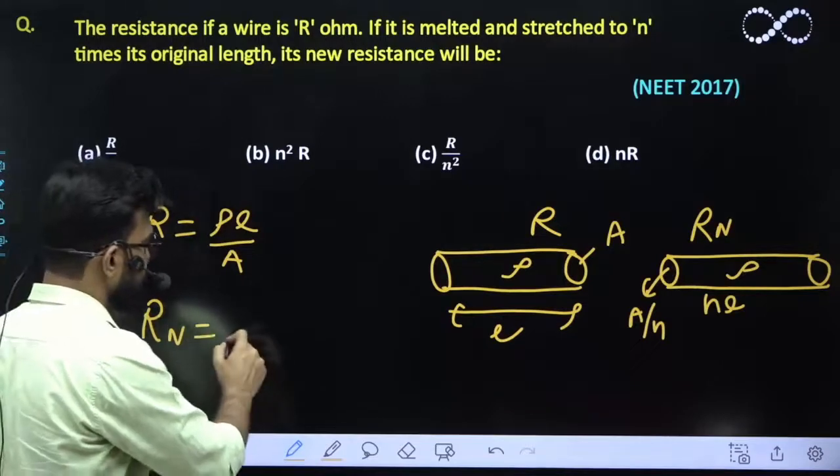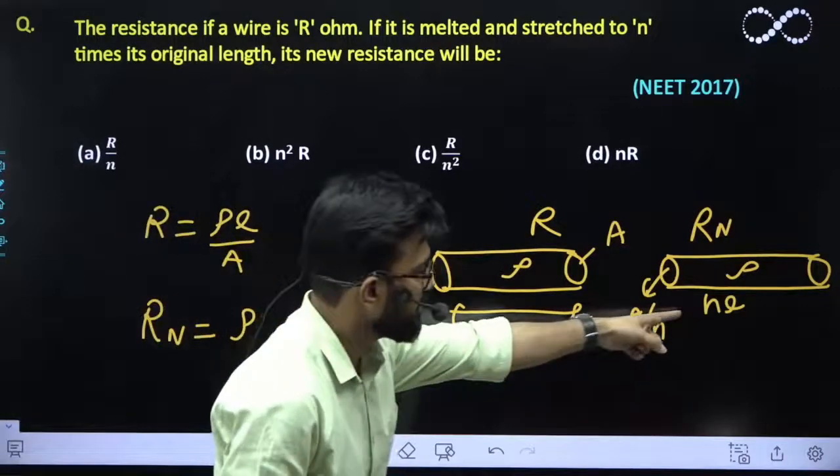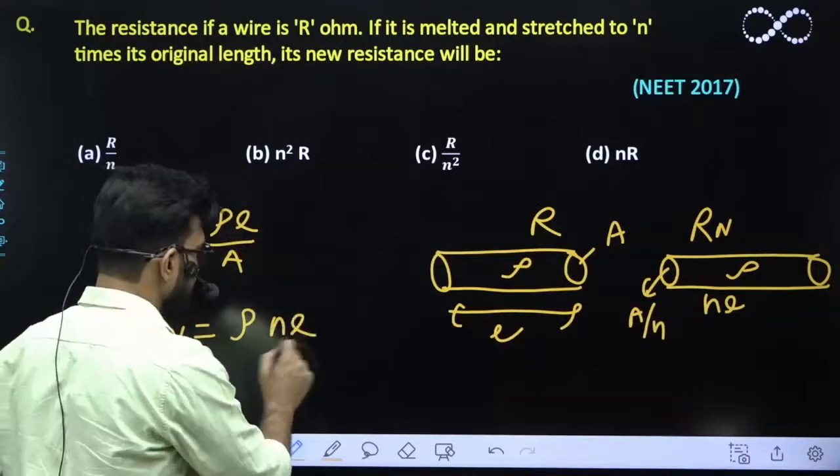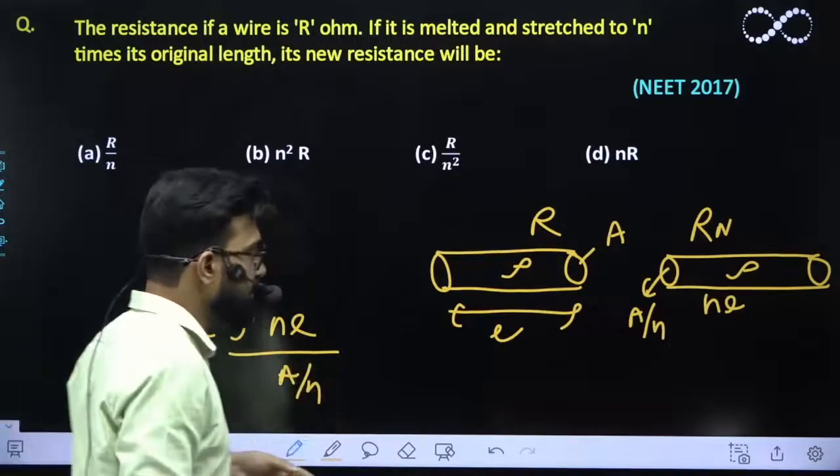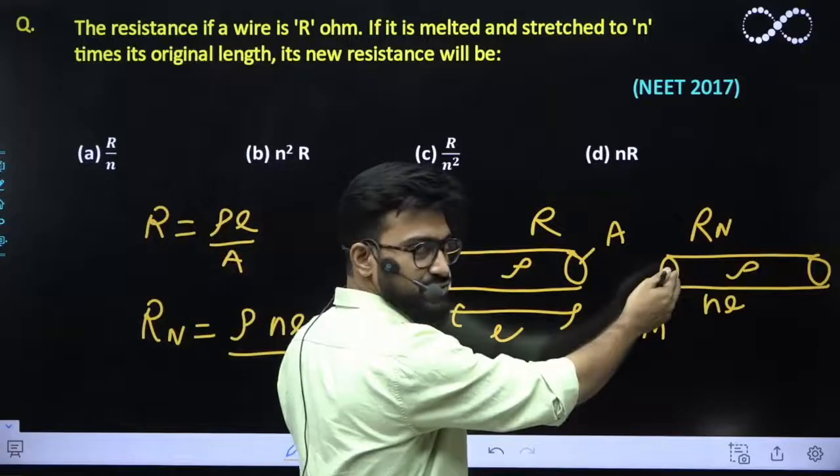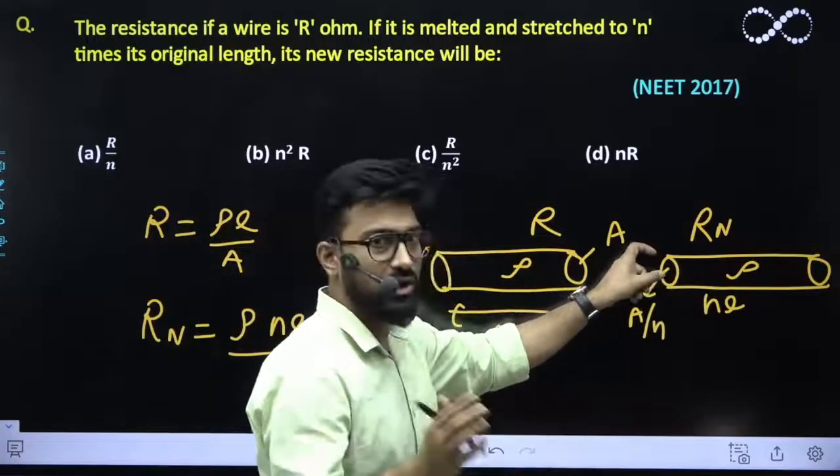So what would be the new resistance? The new resistance would be ρ times new length which is n times l, divided by new area which would be a/n times.